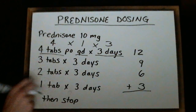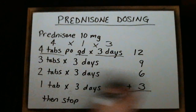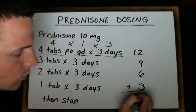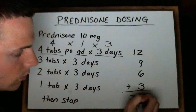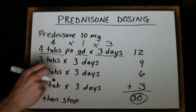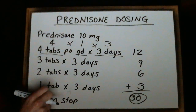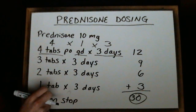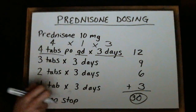We then add up all the tablets and we should come to 30. So we need 30 tablets of the 10 milligram prednisone in order to fulfill this prescription.